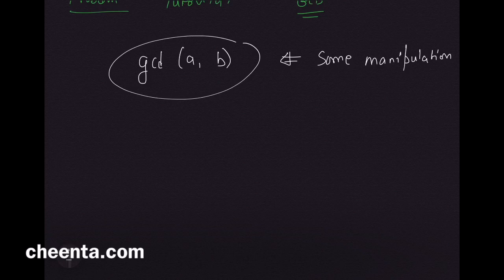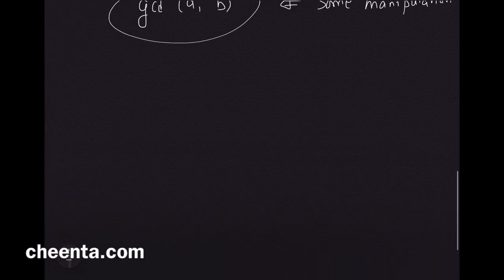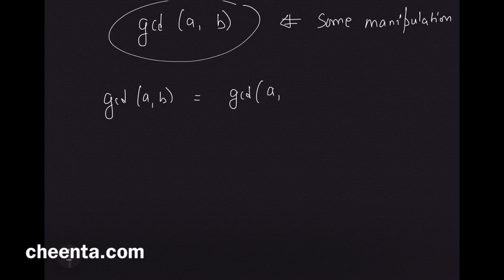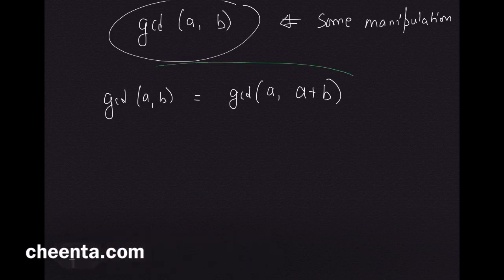There is a useful GCD property: GCD(A, B) = GCD(A, A+B). Can you prove this? Check the link in the description for the tutorial section where you'll find this problem and some clues.